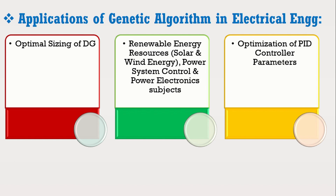In this video, I have discussed the basic introduction of the genetic algorithm and its main five steps, which are necessary to implement it on any engineering-related problem in MATLAB software. In the next video, I will teach you how to implement the genetic algorithm on any engineering model in MATLAB Simulink software. If you like this video, please like, subscribe to my channel, and share it with your friends. Thank you very much.